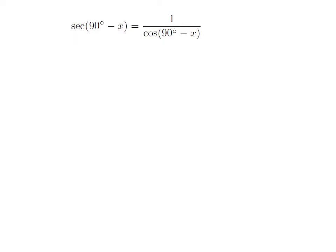As we know, secant of theta is equal to 1 divided by cosine of theta. So, secant of 90 degree minus x is equal to 1 divided by cosine of 90 degree minus x.